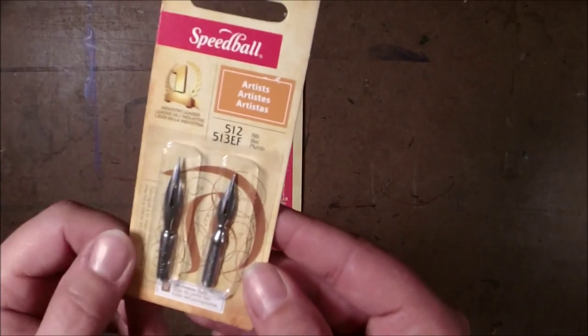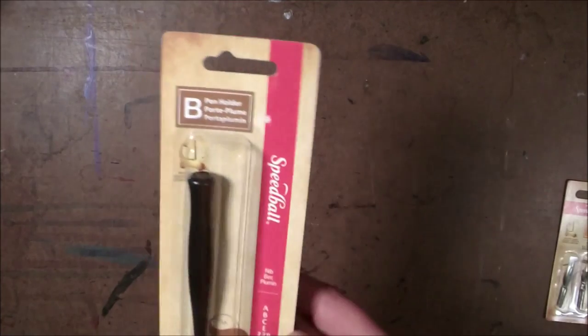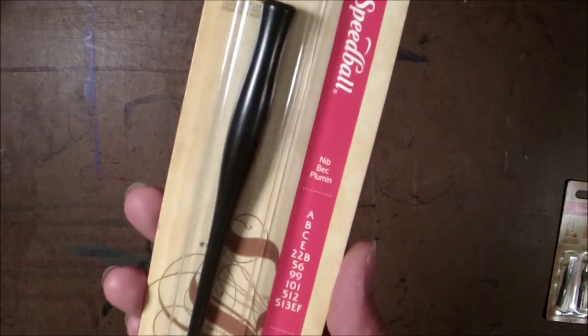They hold the ink, they pull up into them and there is a split in the metal and if you apply some pressure down to your paper it'll drag a much wider line as far as I've seen other people do demonstrations with.